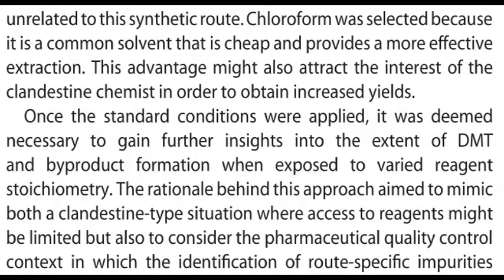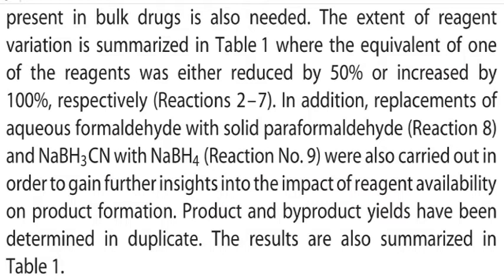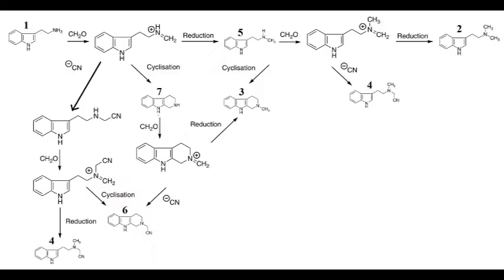The rationale behind varying stoichiometry aimed to mimic both a clandestine situation where access to reagents might be limited, and a pharmaceutical quality control context where route-specific impurities in bulk drugs must be identified. The extent of reagent variation is summarized in table one — where one reagent's equivalents were either reduced by 50% or increased by 100% — in addition to replacements of aqueous formaldehyde with paraformaldehyde and sodium cyanoborohydride with sodium borohydride. All reactions were carried out in duplicate.